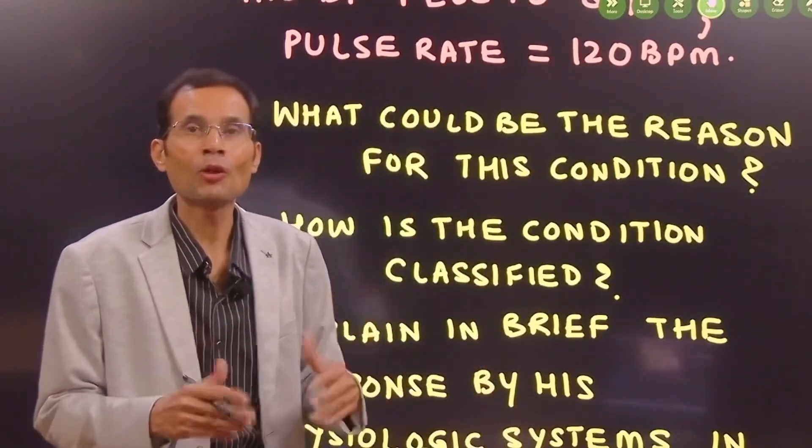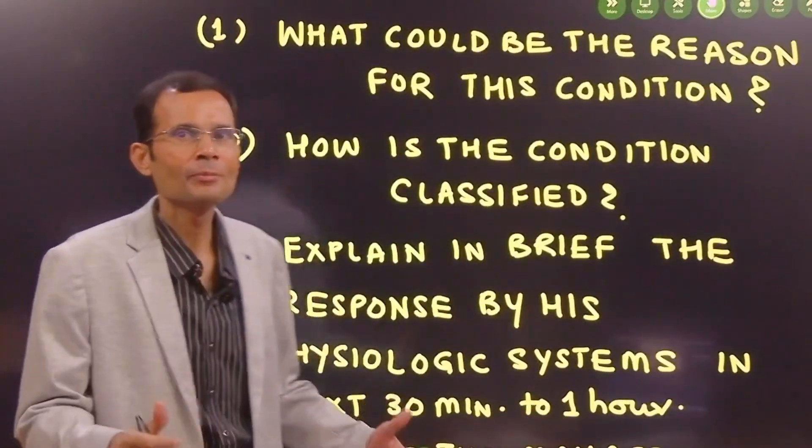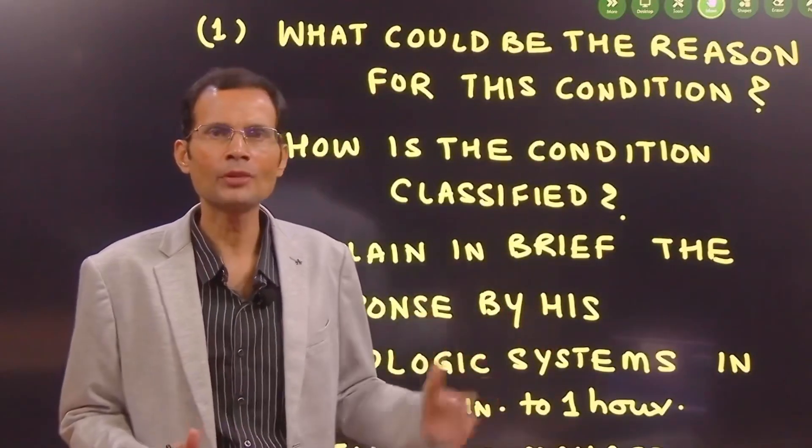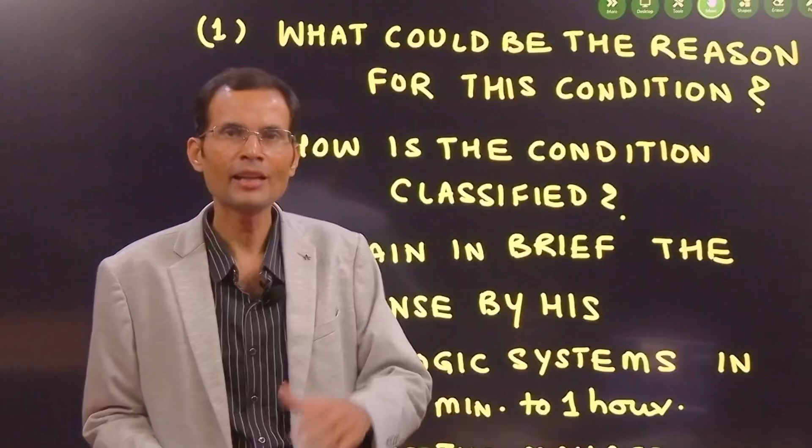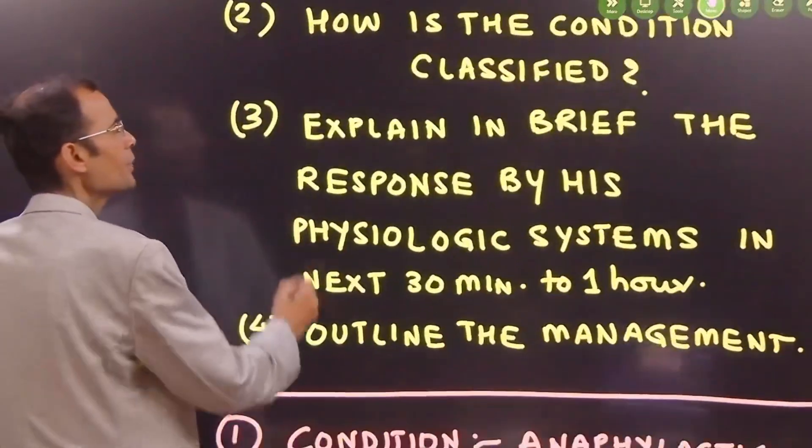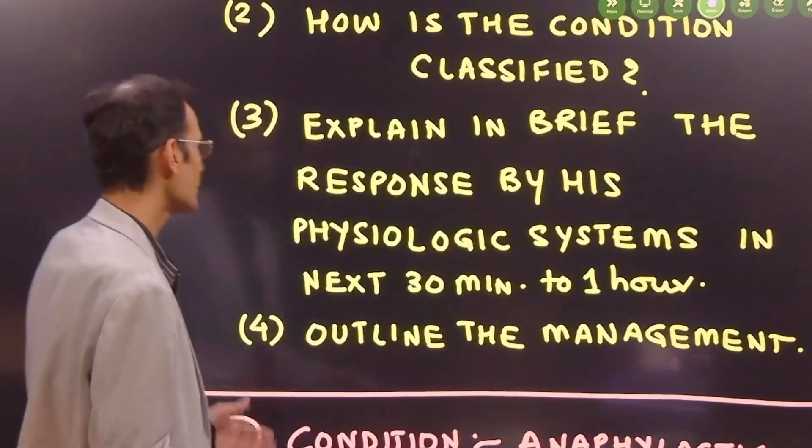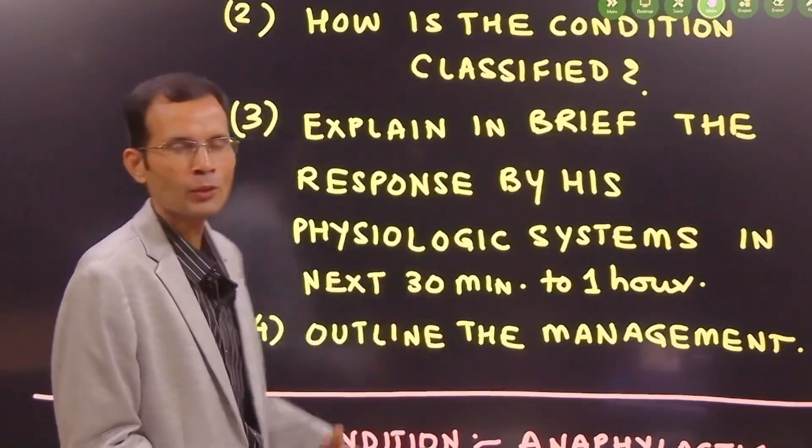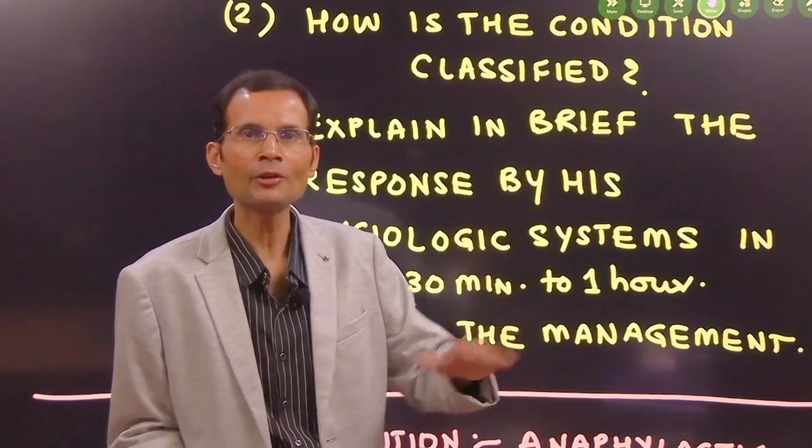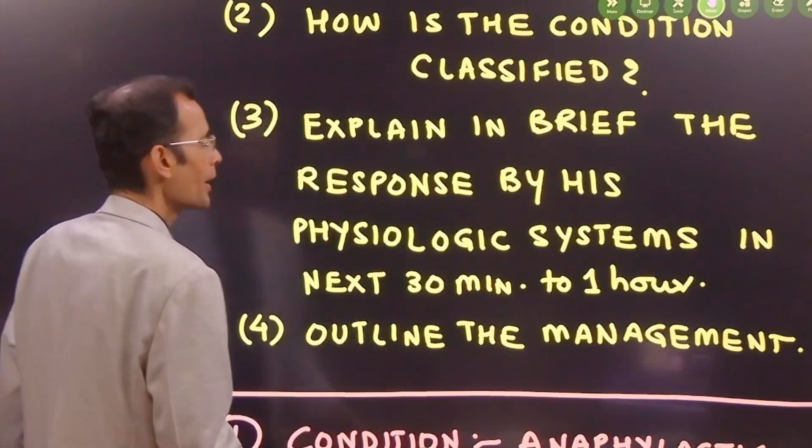Injectable antibiotic was administered and that has caused this condition. They are not asking about his respiratory condition, they are asking what happened after the parenteral antibiotic. How is the condition classified? Explain in brief the response by his physiologic systems or homeostatic systems in next 30 minutes to one hour. This is going in the direction of short-term regulation of blood pressure. And outline the management.